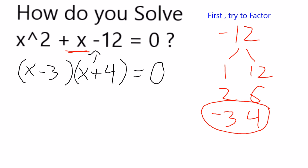Now I'm going to apply the zero product property, which tells us that if the whole left side of the equation is 0, then either x minus 3 is 0 or x plus 4 equals 0.